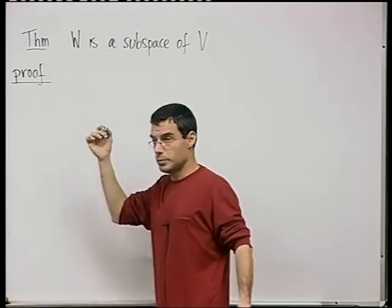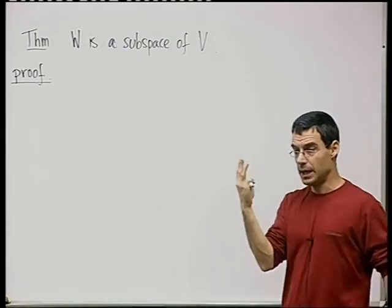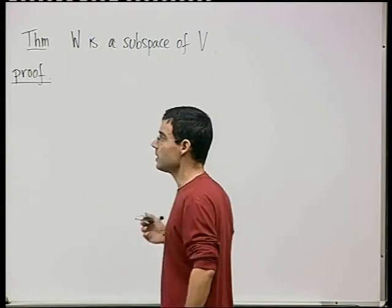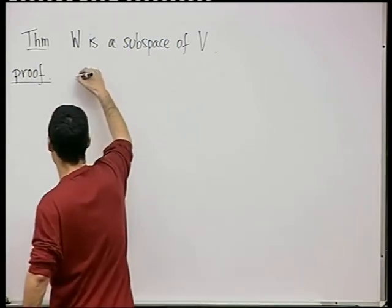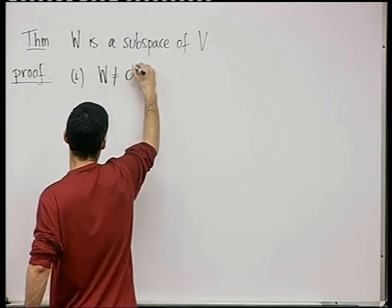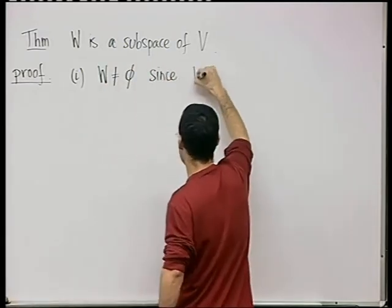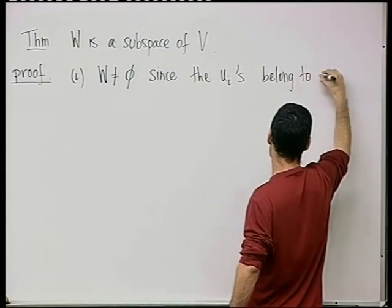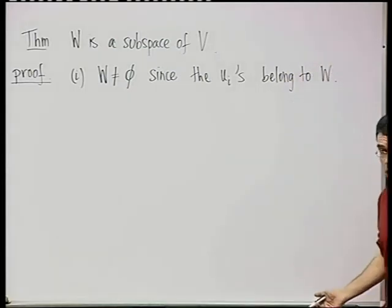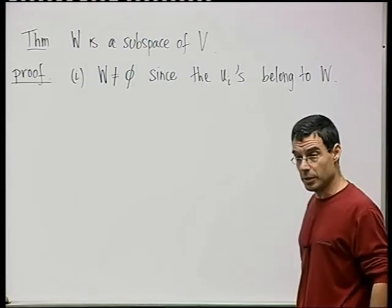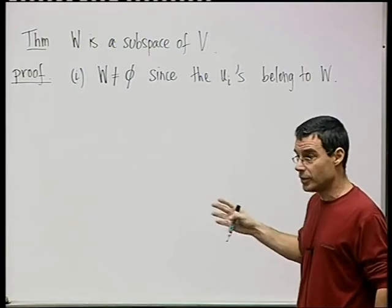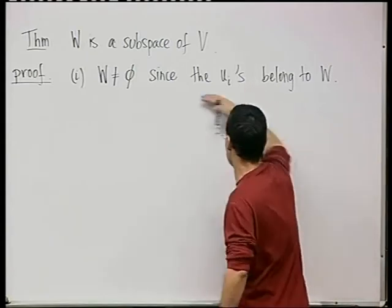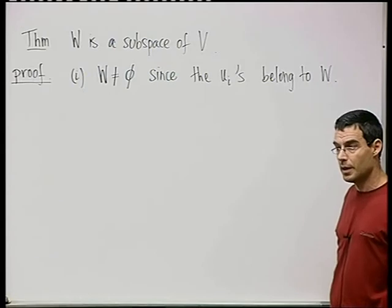So this is going to be a subspace, and we'll remark that it's the smallest possible subspace containing these K elements. Let's first prove this. We need to prove the three necessary conditions for a subset to be a subspace. First condition: W is not empty, since the U i's are in it.